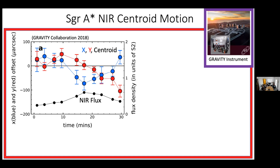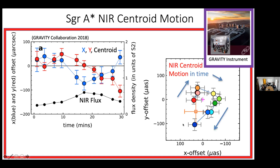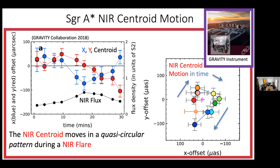These are offsets from the median centroid position. You start with not much change, but then you get a big sinusoidal shape. Plotting it on the XY plane — with arrows representing time over about 30 minutes — you can see the centroid moves counterclockwise on the sky. The pink cross is the median center, approximately the black hole position defined from stellar orbits. Our result is that during a near-infrared flare event, the near-infrared centroid makes a rotation around the black hole.